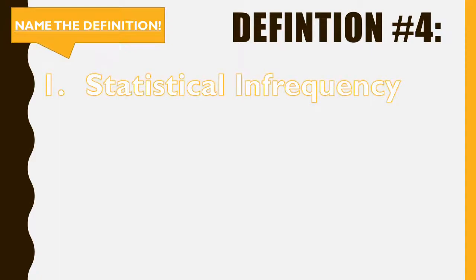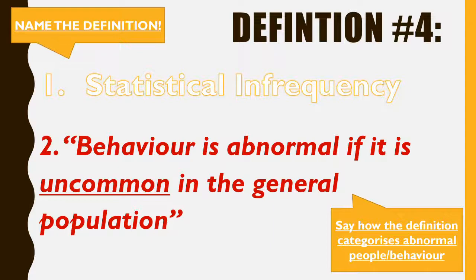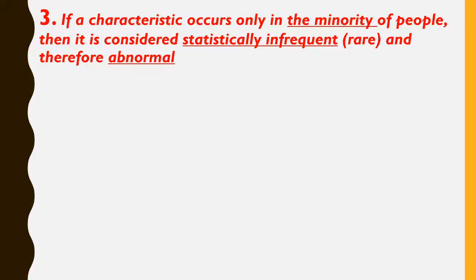Moving on then, back to our format. Definition number four: to name it, it's called statistical infrequency. To say how it categorizes abnormal behavior: behavior is abnormal if it is uncommon in the general population. Anything that's uncommon is statistically rare. So that's sections one and two: name it and say how it defines it. To get the third mark, the bit of elaboration, you say: if a characteristic occurs only in a minority of people, then it is considered statistically infrequent, rare, and it is therefore abnormal.